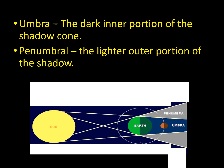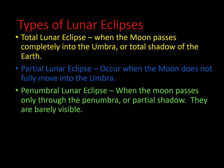The umbra is the dark inner portion of the shadow, and the penumbra is the lighter outer portion. There are three types of lunar eclipses: total lunar eclipse, partial lunar eclipse, and penumbral lunar eclipse. A total lunar eclipse is when the moon passes completely into the umbra. A partial lunar eclipse is when the moon does not fully move into the umbra. A penumbral lunar eclipse is when the moon passes only through the penumbra and is barely visible.